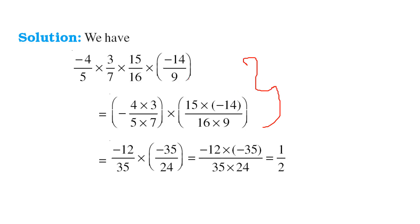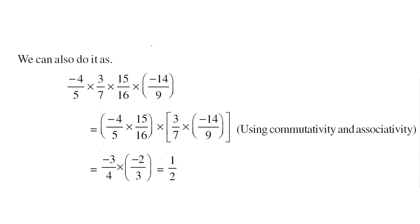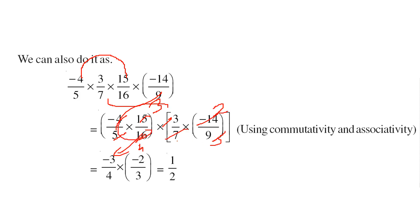For a multiplication example, if you want to combine and multiply these numbers, you can multiply them in pairs and the result comes out to be one half. Alternatively, using commutativity and associativity, you can pair numbers strategically — for example, grouping 4 fours as 16, or 5 threes as 15 — to make the computation easier, and you'll still get the same result.